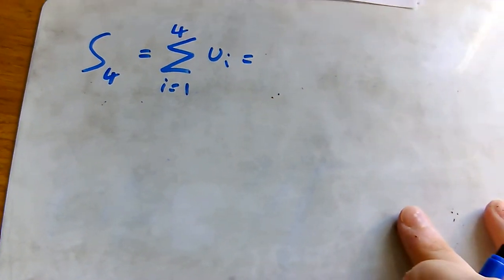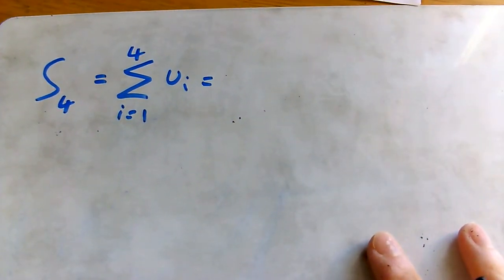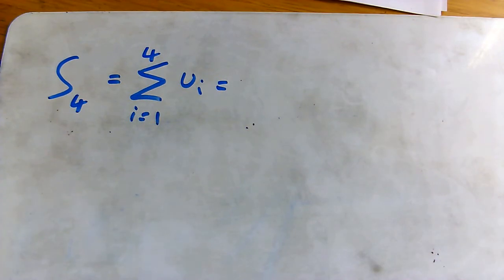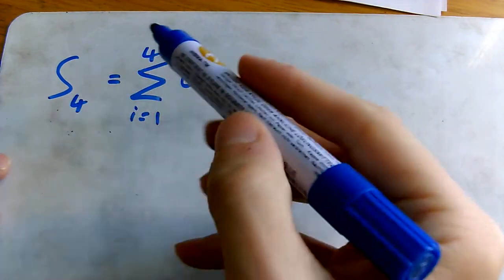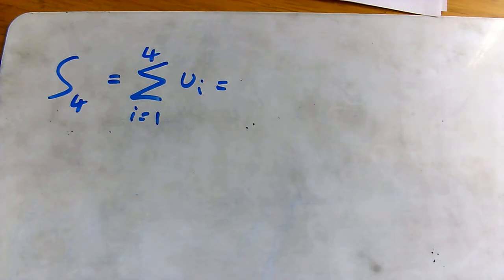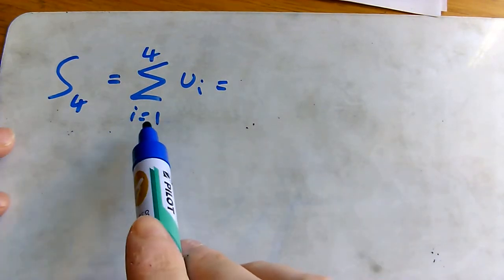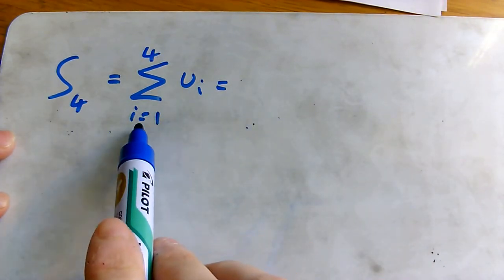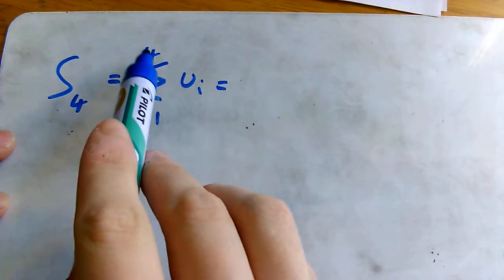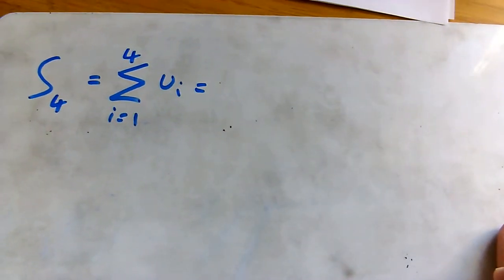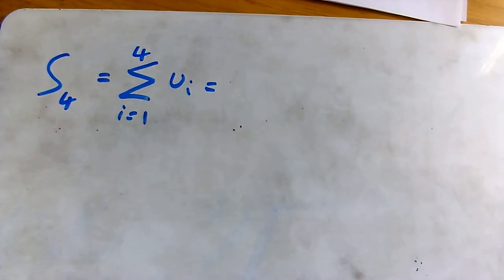I recommend you do this along with me as well. It does help to write things out if you're trying to follow along. So this means that we're going to sum the first four terms of a certain sequence — we're going to start where i equals one and go to the fourth term. I've just chosen four because that's all the space I've got on this whiteboard, but this would work for any particular number.